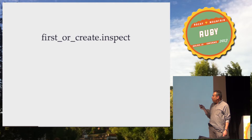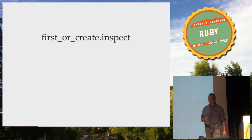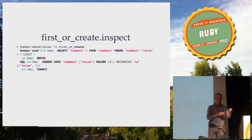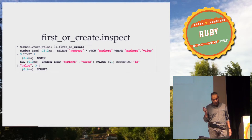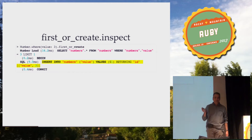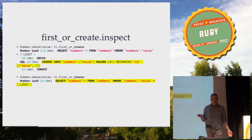What's going on inside? We use the very convenient inspection tool Rails provides — the Rails console — to see what statements ActiveRecord outputs in the log. We can see that first_or_create does exactly what it promises: it checks if a record exists, and if it doesn't, it creates a new record. The second process comes in, checks, finds the record already exists, and does nothing.